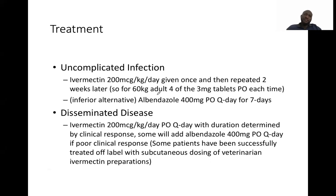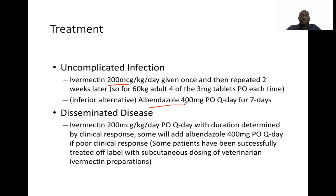For treatment of uncomplicated infection, ivermectin at 200 micrograms per kilogram per day is the drug of choice, which can be repeated two weeks later. Albendazole is an inferior choice with a high tendency for recurrence. For disseminated disease, ivermectin is again used depending on treatment response, continued until the patient is completely cleared. Some patients have been treated with subcutaneous dosing of ivermectin based on veterinary drug data, which is not FDA approved but is sometimes used.